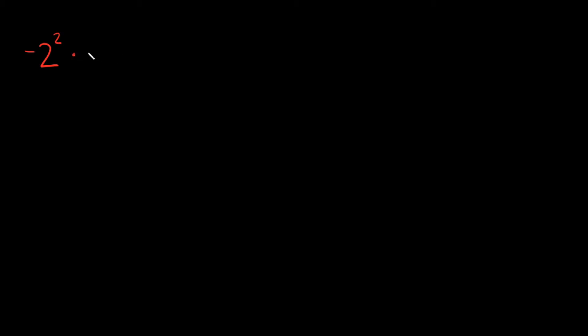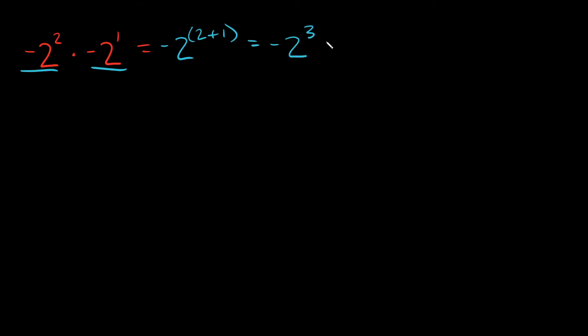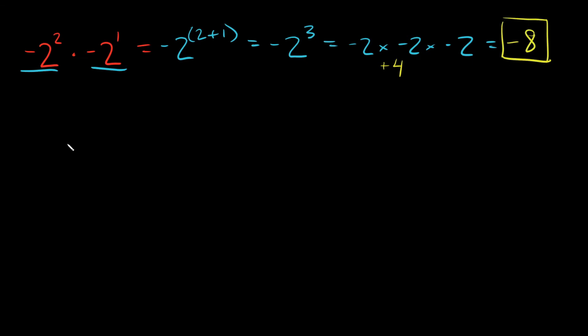Now let's do examples with negative bases. What if I gave you negative 2 to the second power times negative 2 to the first power? Keep the base as negative 2, then add the exponents: 2 plus 1 equals 3. So this is negative 2 to the third power, which is negative 2 times negative 2 times negative 2. Negative 2 times negative 2 is positive 4, and positive 4 times negative 2 is negative 8.